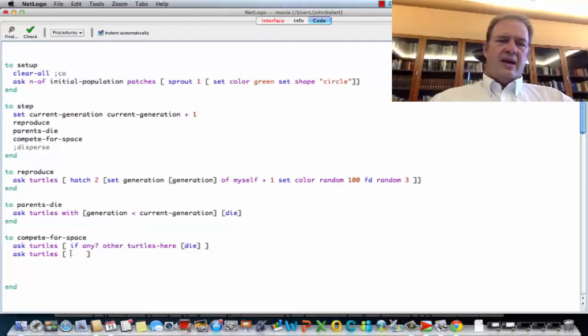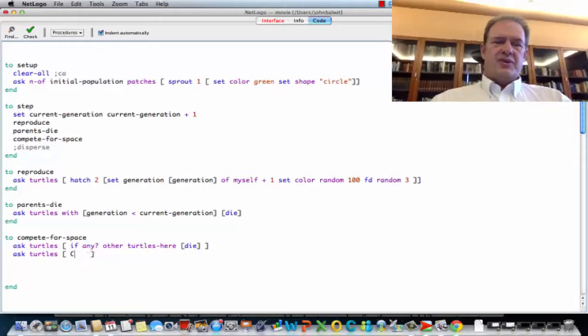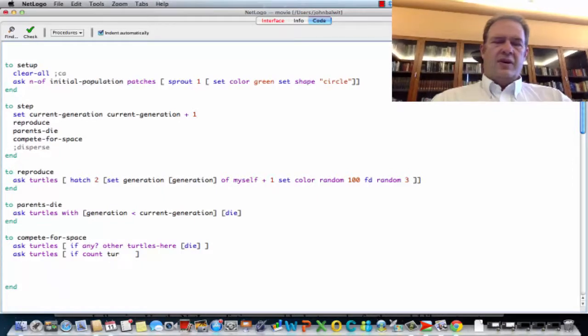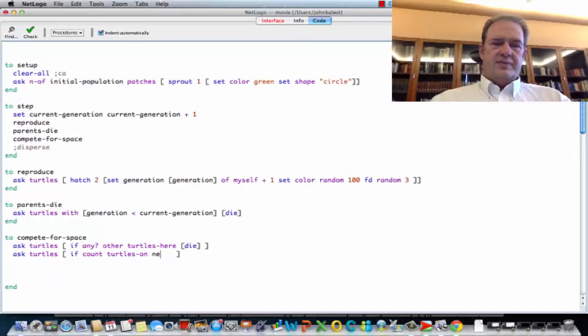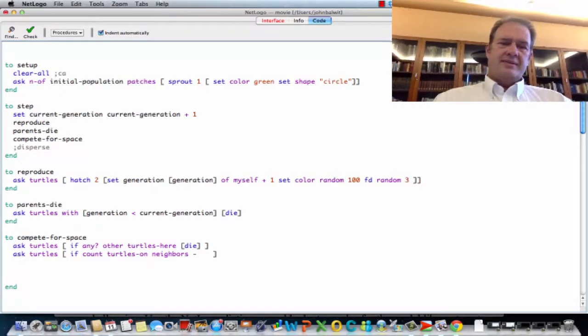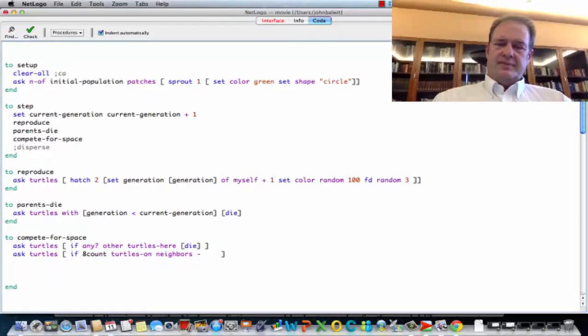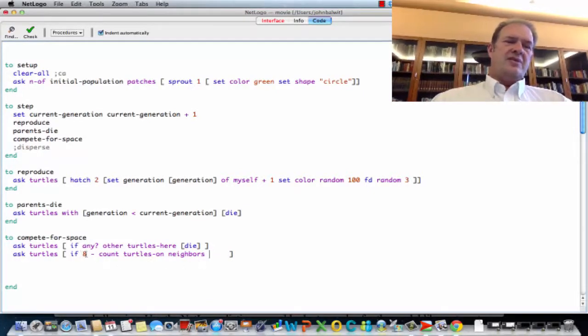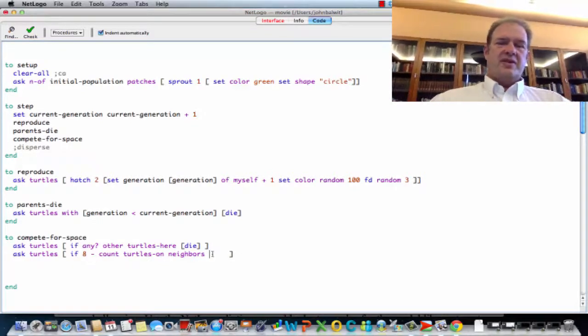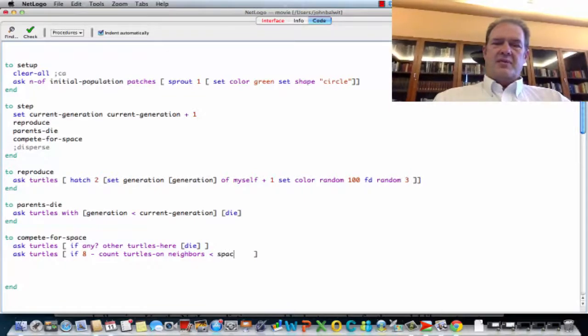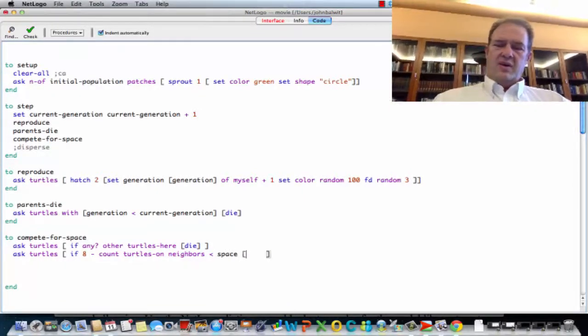And I'm going to ask... We can easily count the turtles on the neighbors. So I'm going to say if the count of turtles on neighbors is minus... Oh, let's say eight minus the count of turtles. That gives us... Think about that for a second. That should give us how many empty spaces. There's eight spaces. Take away how many turtles are on those empty spaces. And we have how many empty spaces are left. If that number... If the empty spaces is less than the amount of space that a turtle needs to live, then we're going to ask the turtle to die.